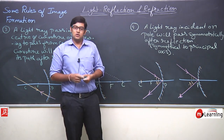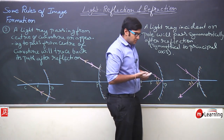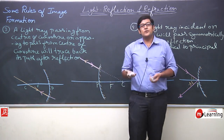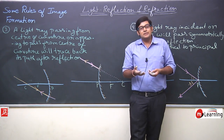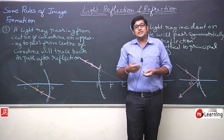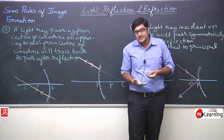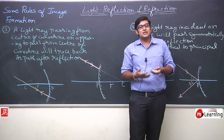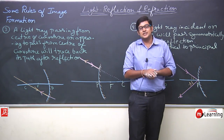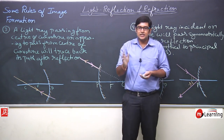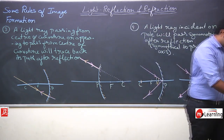These are the four rules based on which we will form different images. We will learn how image formation happens in curved mirrors — the nature, position, and size of images — and discuss all of this in the next class. Please note these rules down.